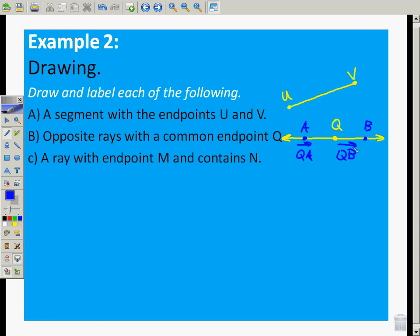A ray with an endpoint M. So endpoint, meaning where it stops. And it contains N. N is on there. But M is really my featurette. Because it's the endpoint. M is my endpoint. It contains N. All right, here we go.